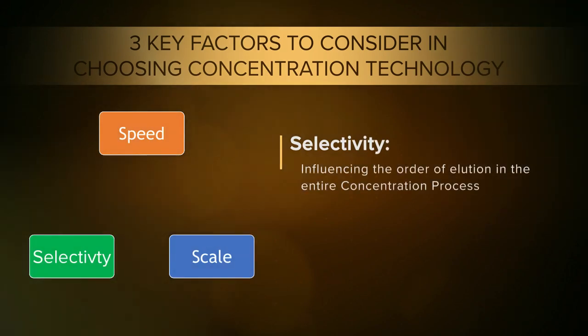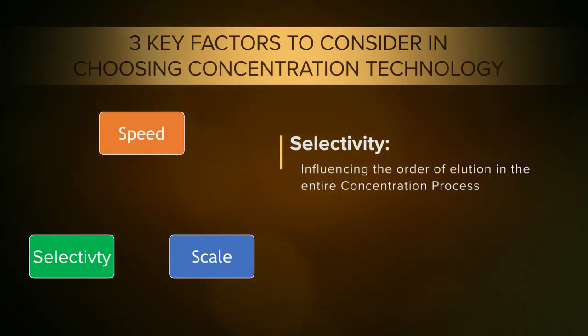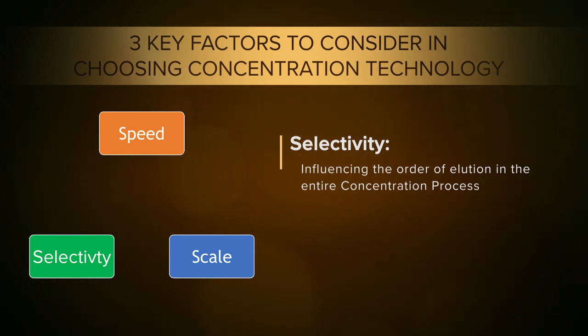The next S is selectivity. When looking at selectivity, what do I want to get out of that formulation — do I want just a few molecules or a broad sweep of molecules? When you're looking at speed, scale, and selectivity, you've got to pick two. You don't get three.